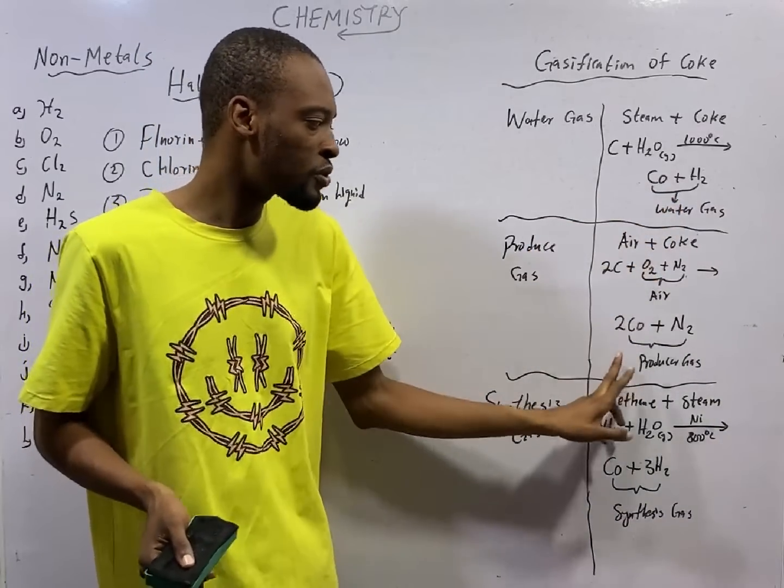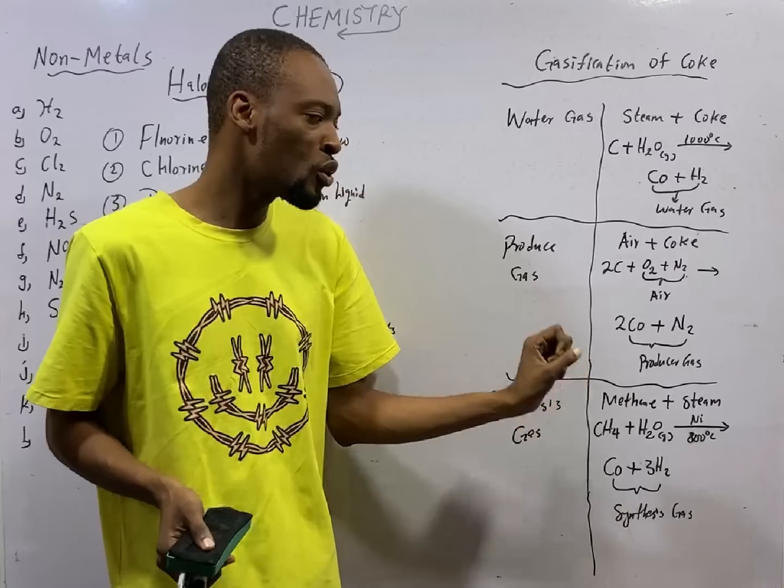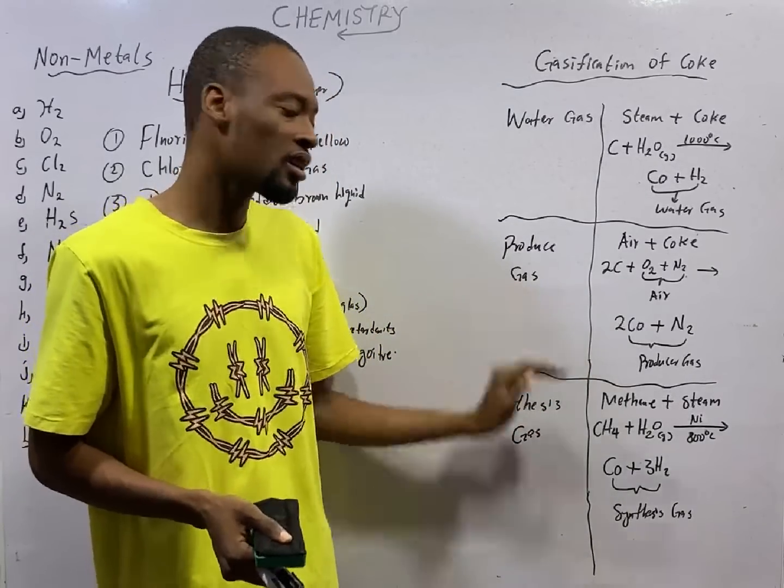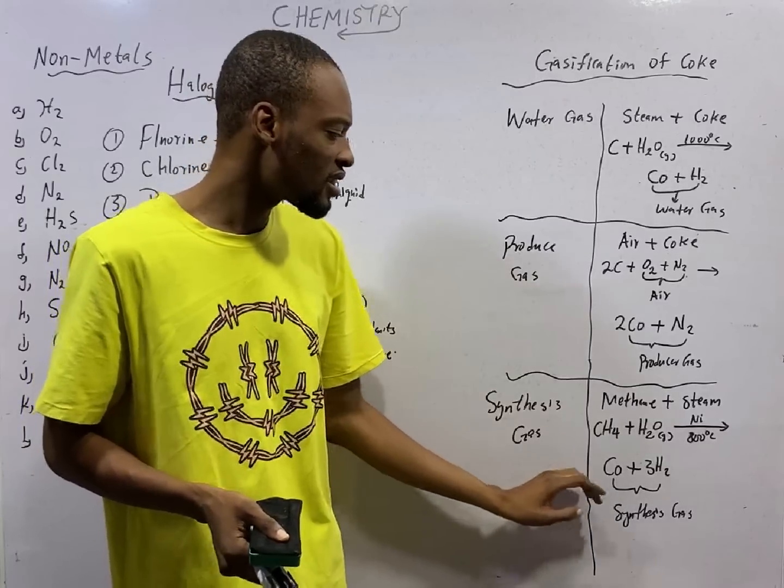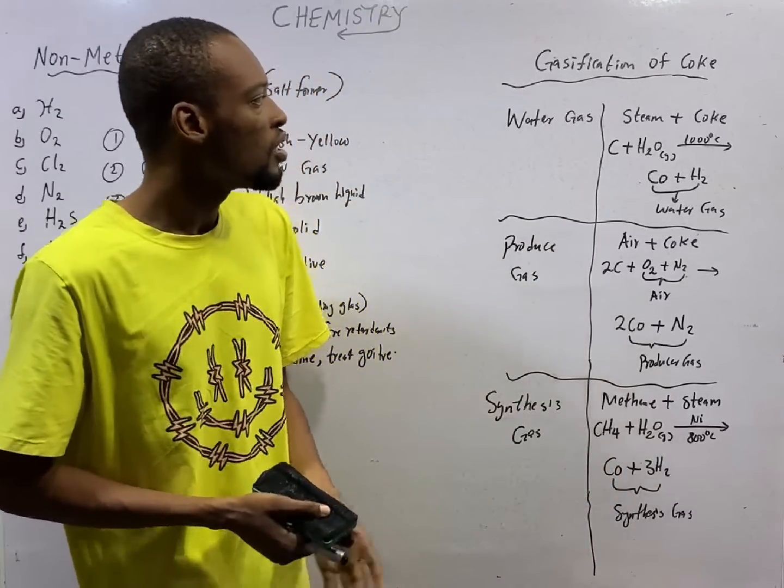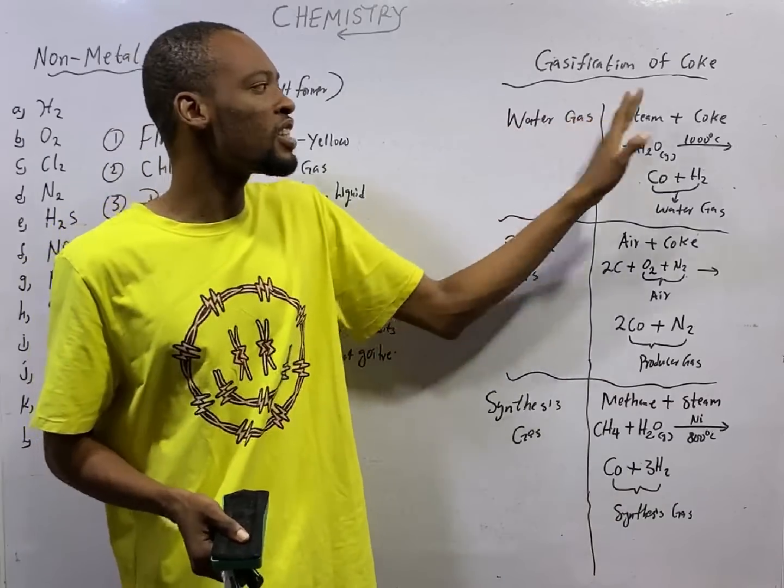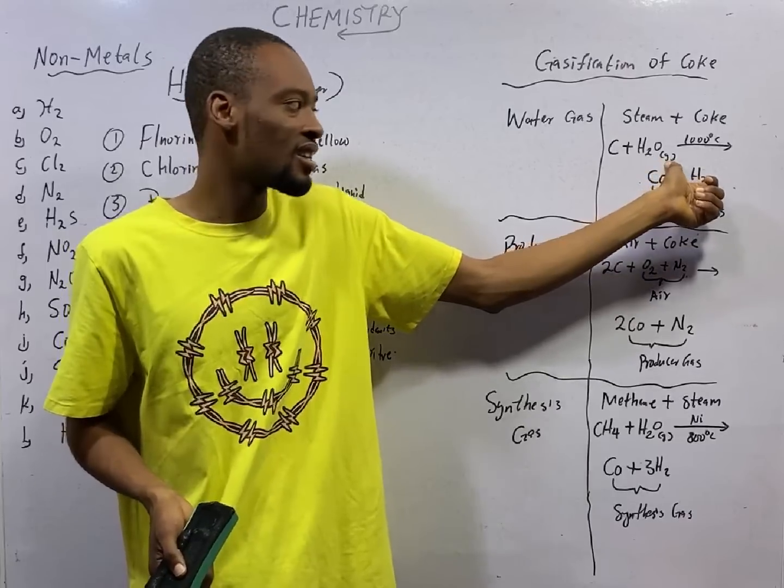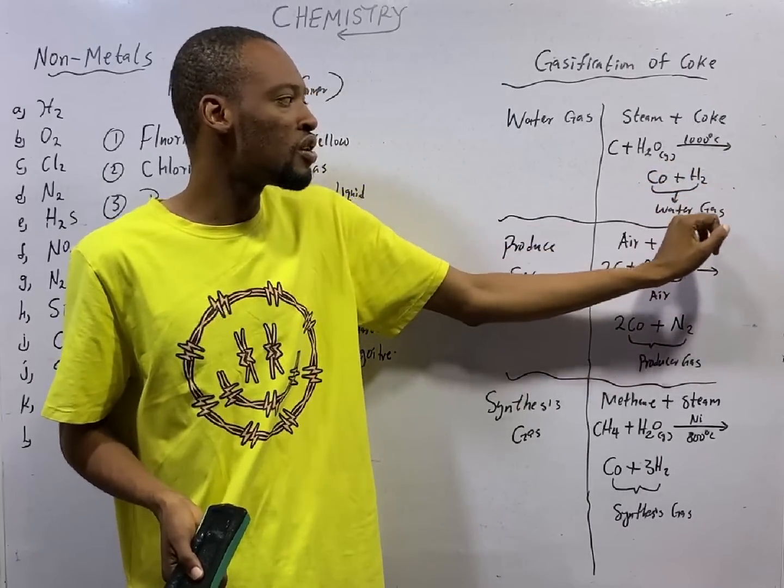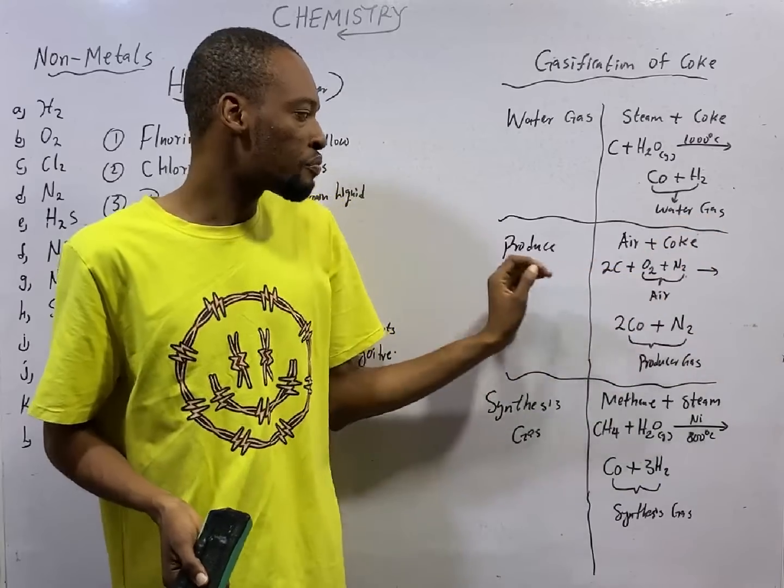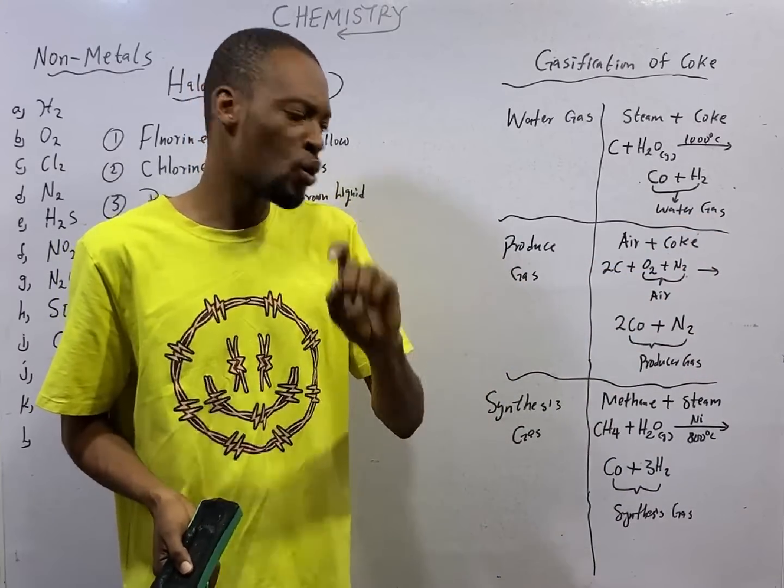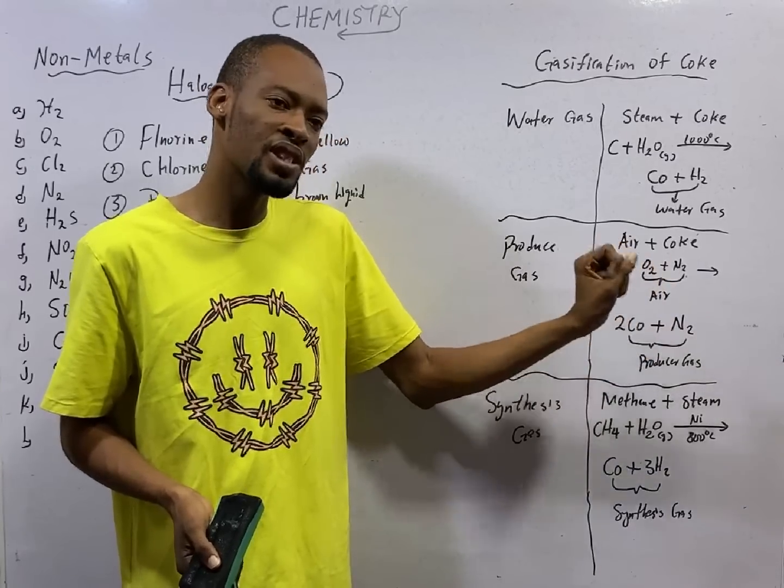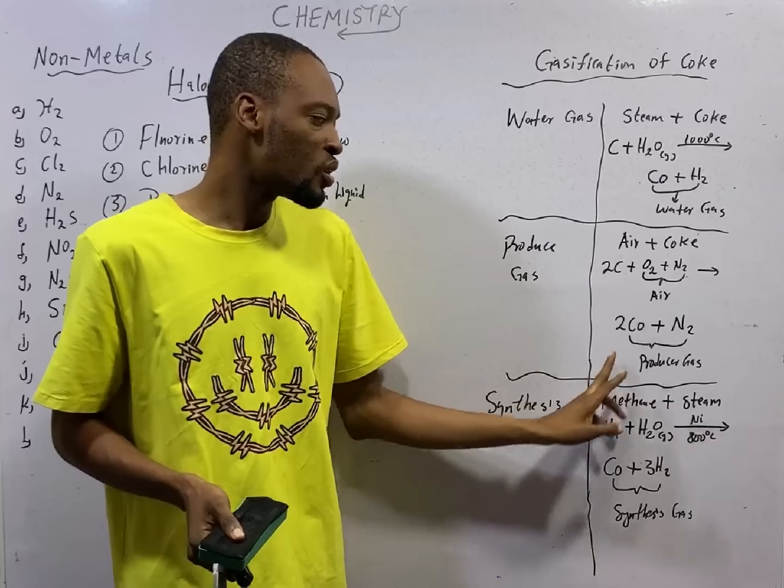Water gas itself is CO plus H2 together, they form water gas. Producer gas is 2CO plus N2 together, that is producer gas. While synthesis gas is CO plus 3H2. Water gas is gotten from steam and coke. If carbon, which is coke, reacts with water gas at 1000 degrees Celsius, you form water gas. Producer gas is gotten from air and coke.